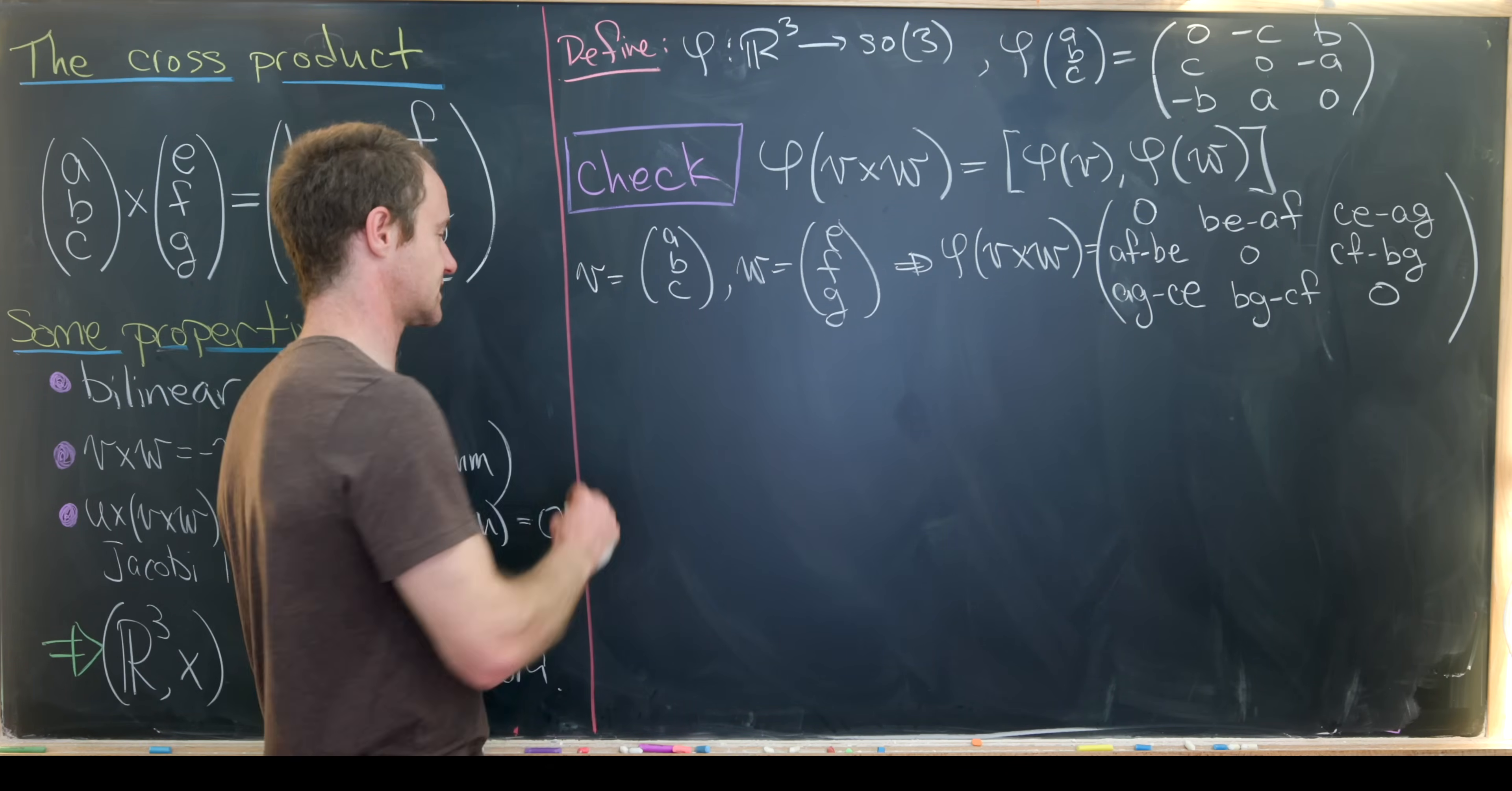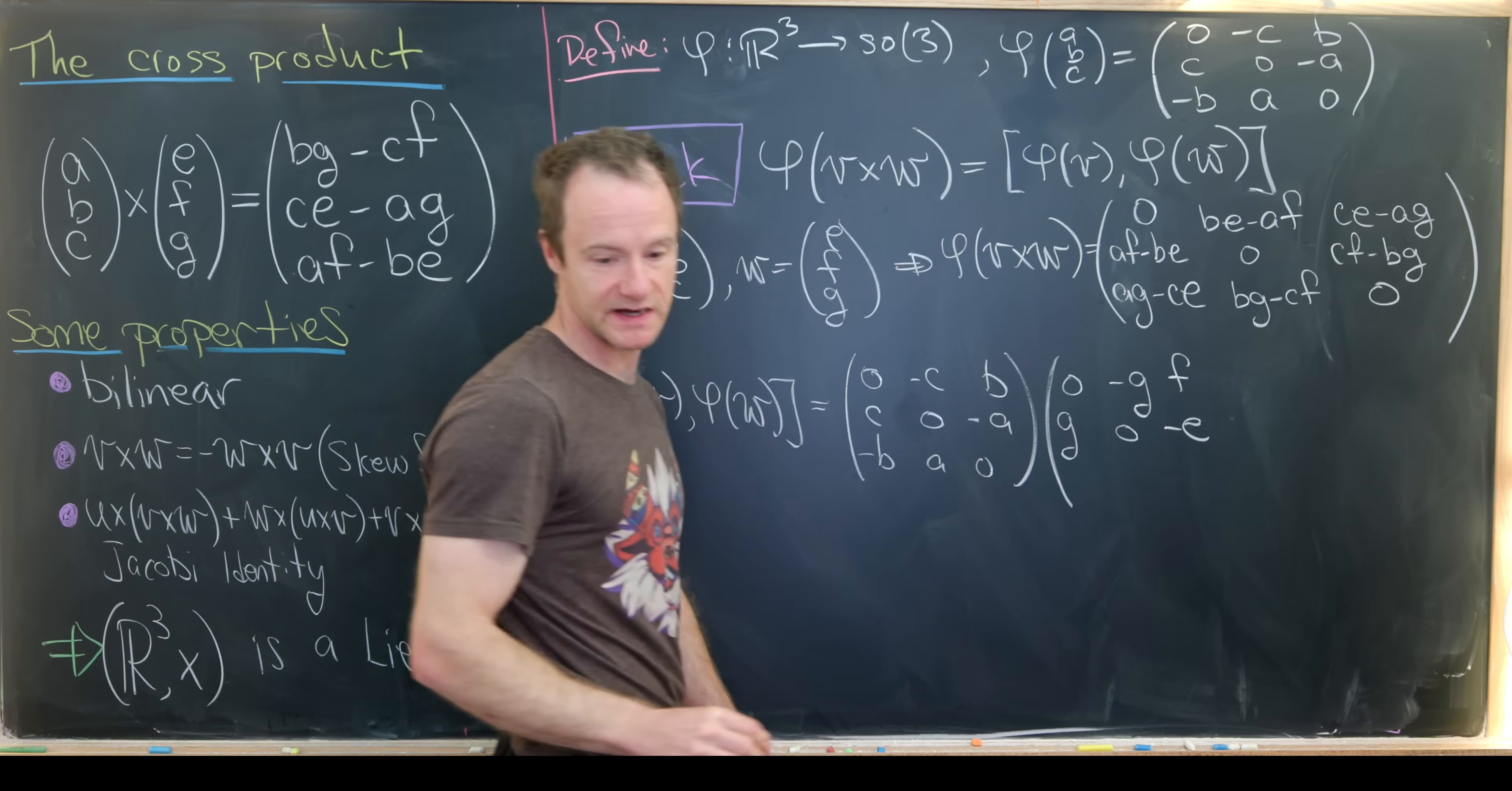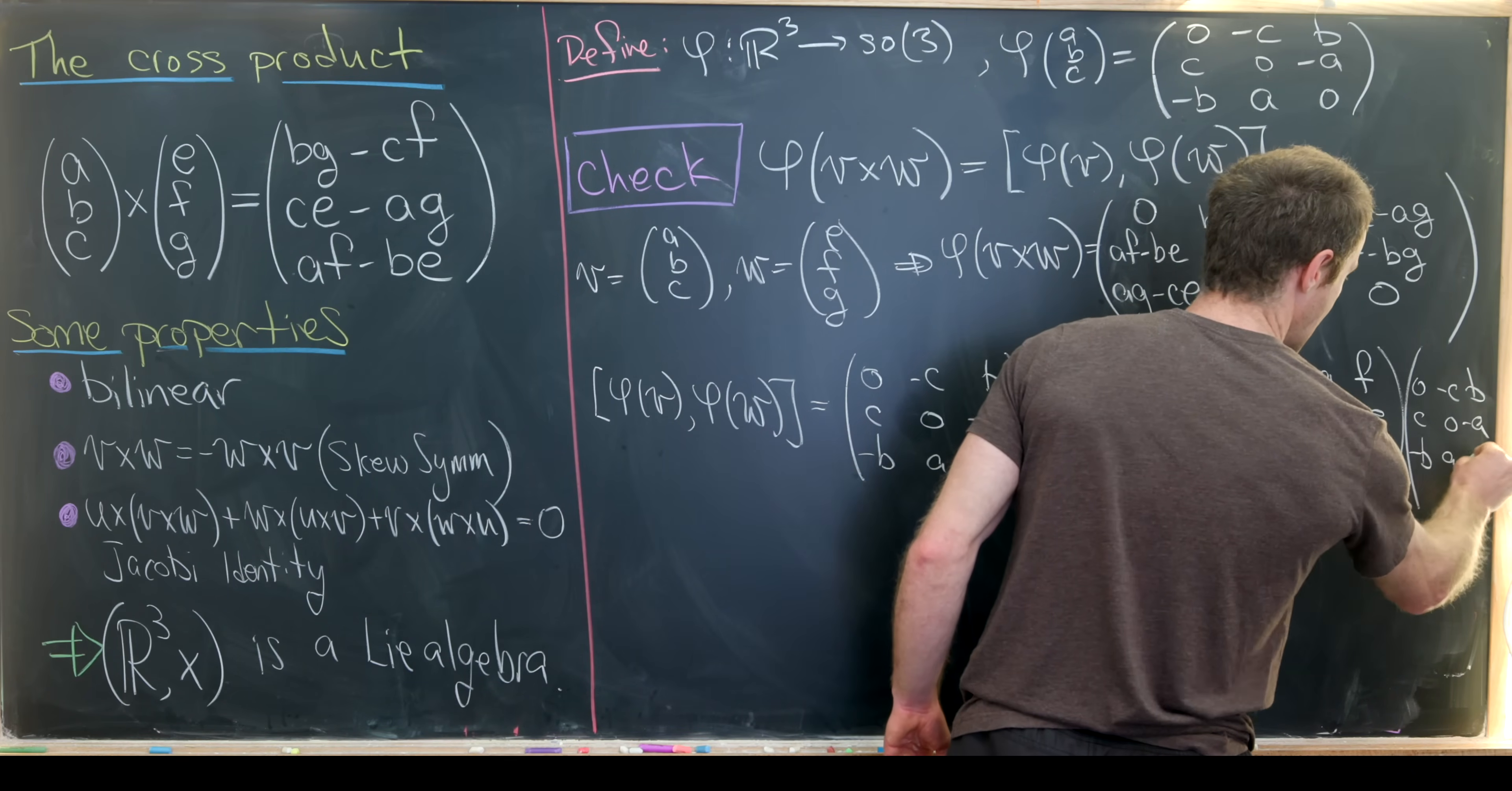Now we're going to calculate this right-hand side, this commutator. So that'll be phi of V, phi of W in brackets. So recall that means phi of V times phi of W minus phi of W times phi of V. But in terms of our matrices, that's going to be 0 minus CB, and then C0 minus A, and then minus BA0. So that's our first matrix. And then 0 minus GF, G0 minus E, and minus FE0. And then we need to subtract the opposite order multiplication here.